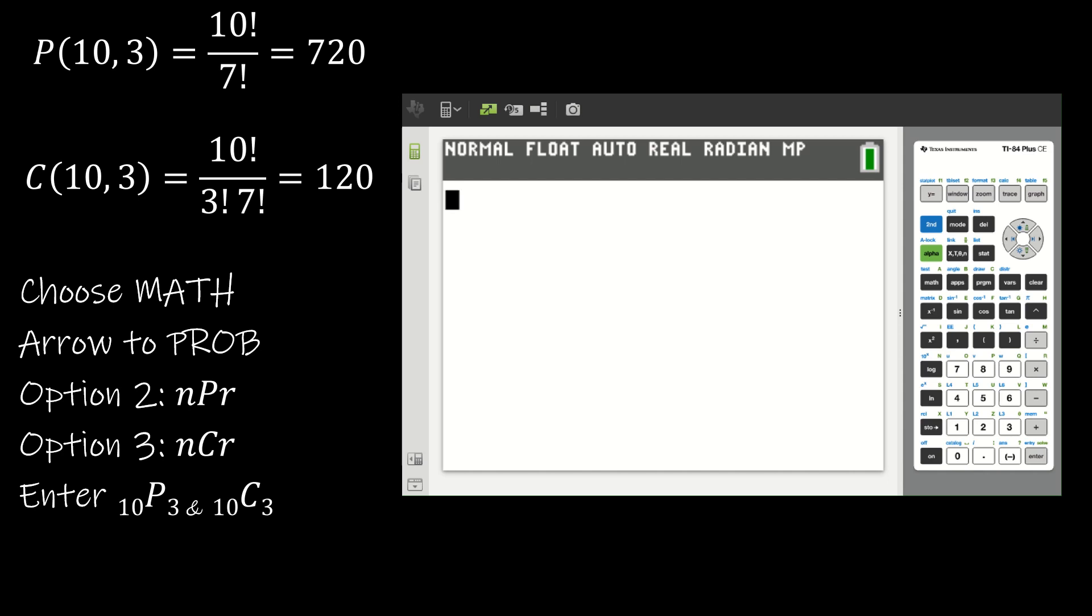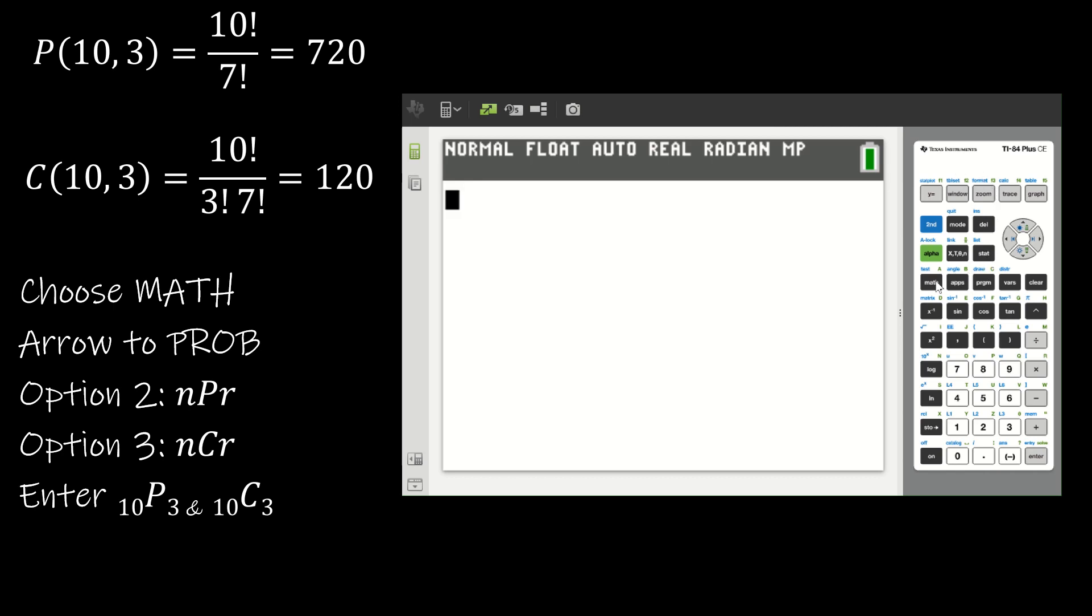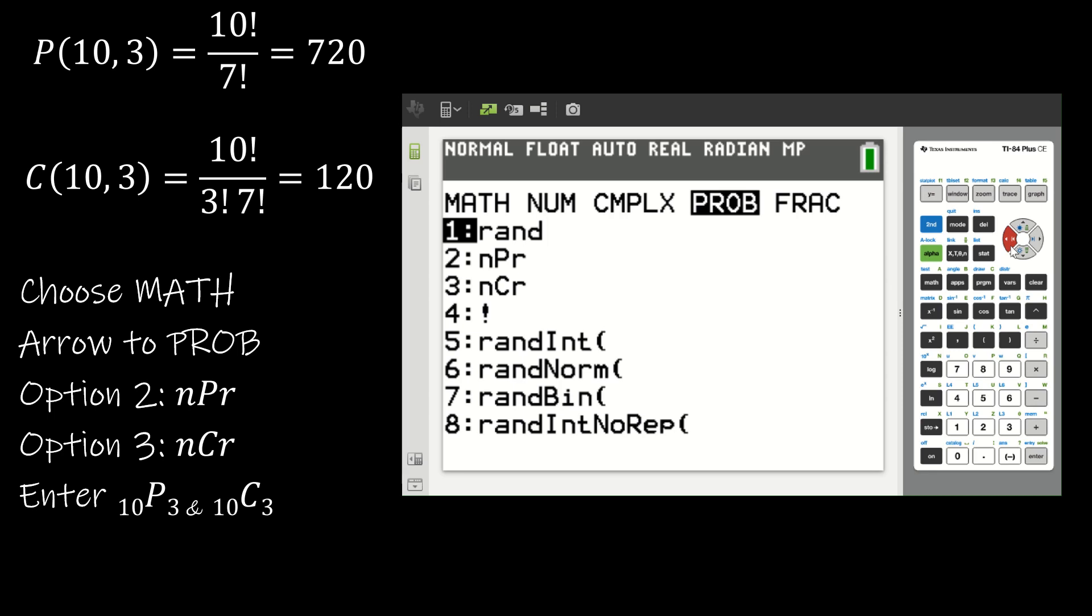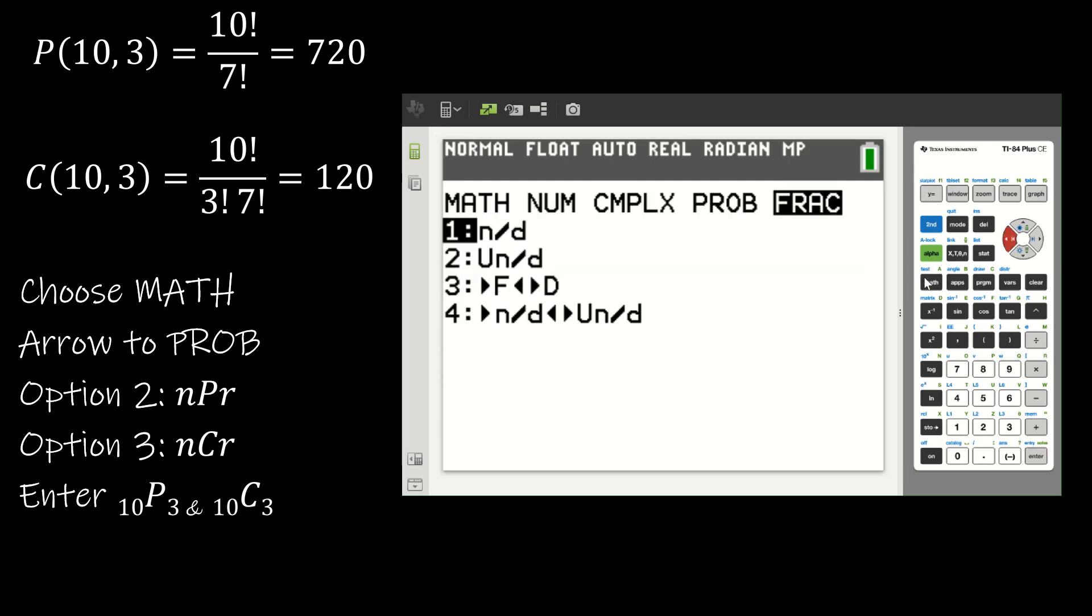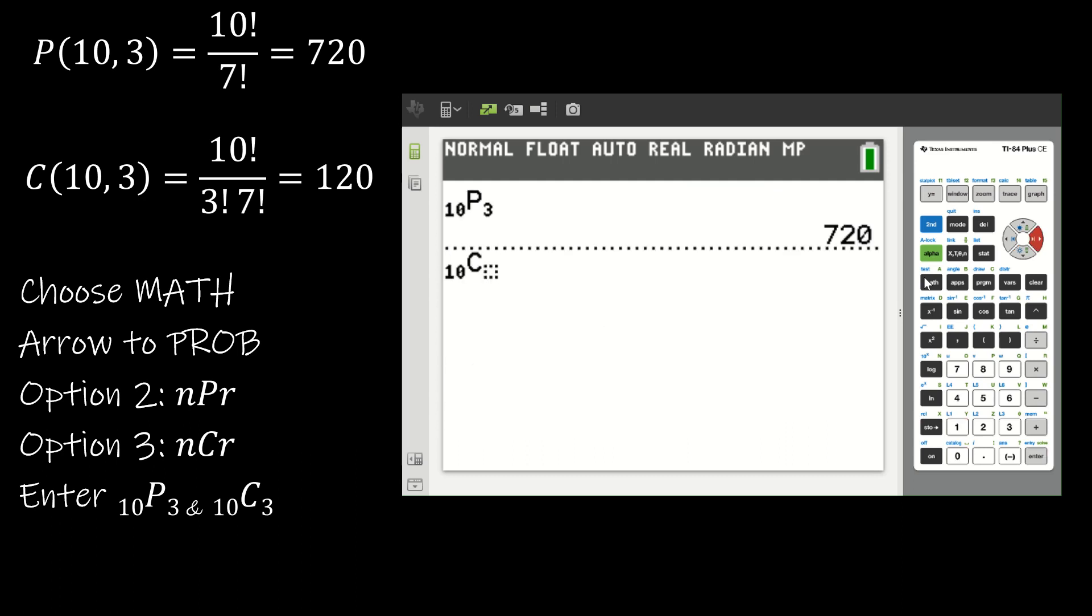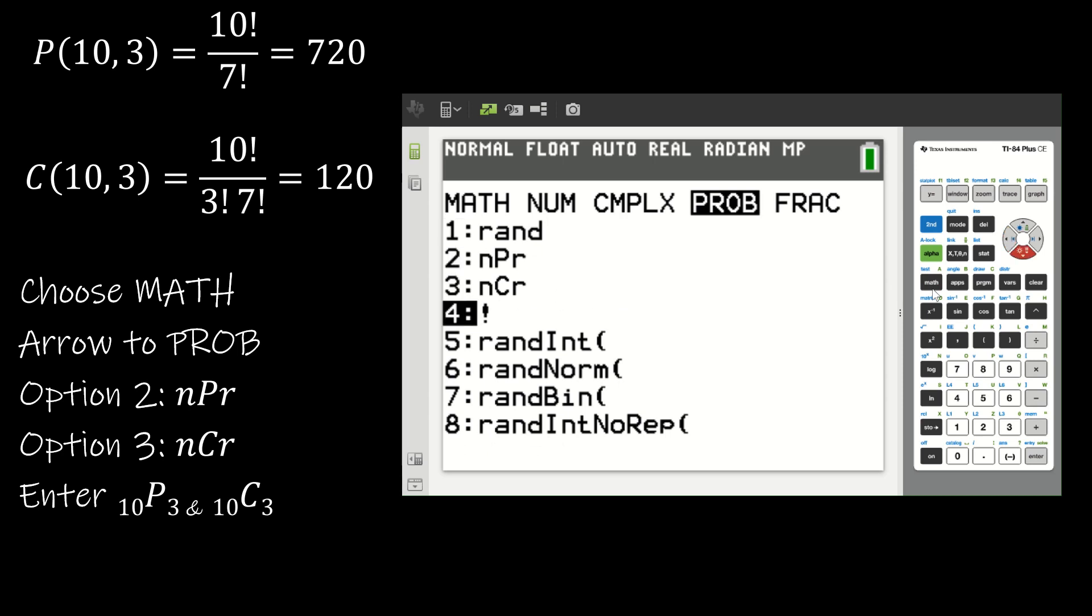Before we talk in any more detail about any of these items, I do want to just quickly show you how to use a TI-83, 84, 85 to do these calculations for you. So we are just going to choose the math option, and we're going to take a look at both permutations and combinations. So I'm going to arrow over to probability, then I can choose option 2 if I'm trying to find NPR, and so instead of 10 comma 3, it's 10 P 3, and it's going to find that solution for you. I can do the exact same thing, math prob, and then 3 for 10 choose 3, and it's going to find the combination for me.